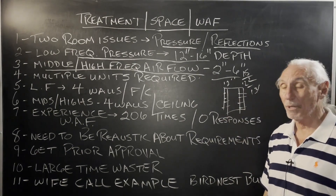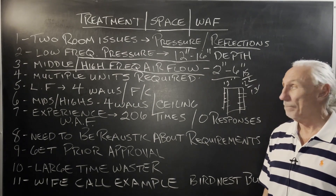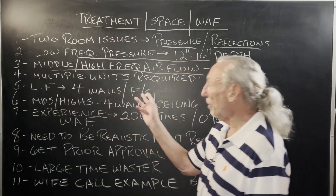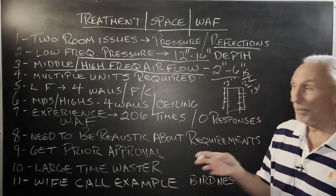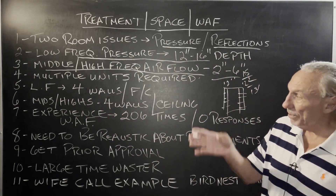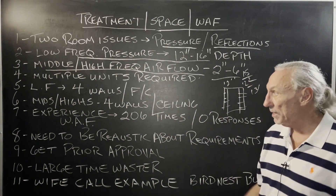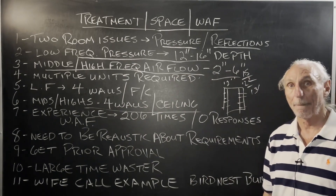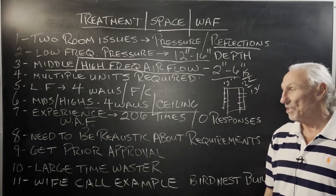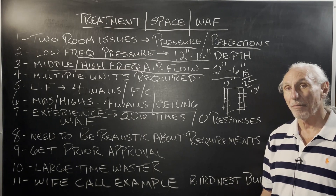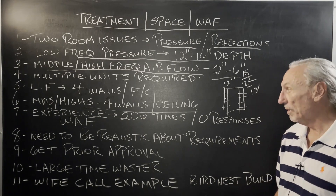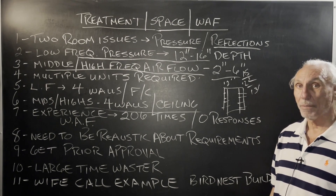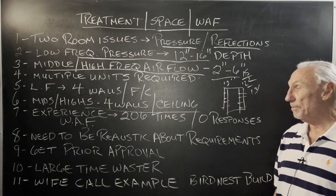Multiple units are usually required. You've got to have lots of surface area coverage. For low frequency management: four walls, floor, ceiling — remember our three sound fields: sidewall, sidewall, front, rear, floor, ceiling. Treat the four walls, floor, and ceiling. For mids and highs: four walls and the ceiling. The ceiling is the shortest dimension, so we're going to have a lot of mid-range reflection issues that turn into dips. You don't want dips. Peaks you can manage; dips are a pain.